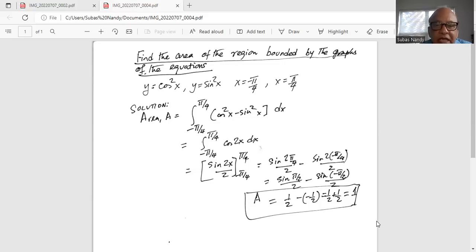So solution area A is equal to integration, limits of integration are from minus pi over 4 to pi over 4. Cosine square x minus sine square x dx.